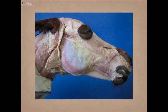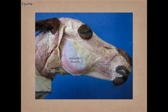Here again is the masseter muscle. Here we have the buccinator muscle. The buccinator muscle is important for returning food from the oral vestibule back into the oral cavity — getting it back where the animal can chew on it.